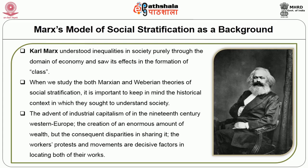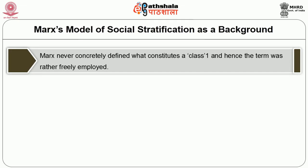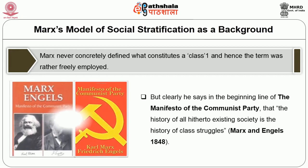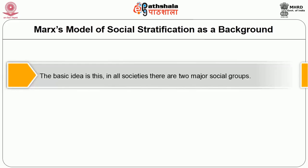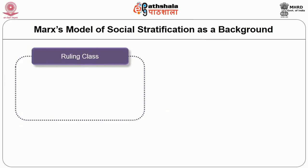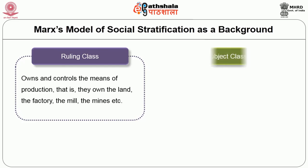Marx never concretely defined what constitutes a class, yet he says in the opening line of the Communist Manifesto that the history of all hitherto existing society is the history of class struggle. The basic idea is that all societies have two major social groups: a ruling class and a subject class. The ruling class owns and controls the means of production — the land, the factory, the mills, the mines — whereas the subject class provides the labour.